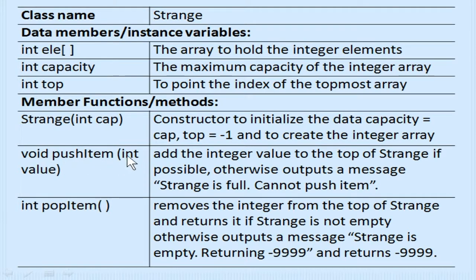Void push(value) inserts the integer value to the top of the strange if possible; otherwise it outputs the message 'strange is full, cannot push item.' The pop item method has a return type integer — it removes the integer from the top of the strange and returns it if the strange is not empty. If the strange is empty, it outputs the message 'strange is empty' and returns minus 9999.